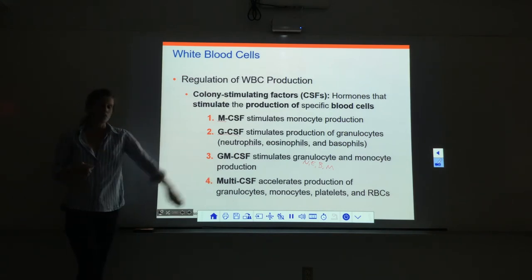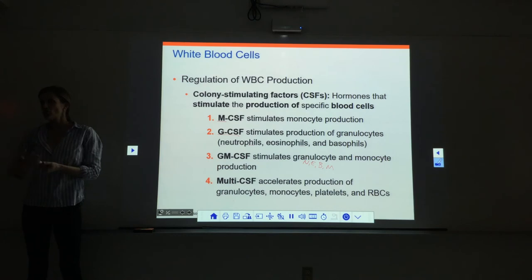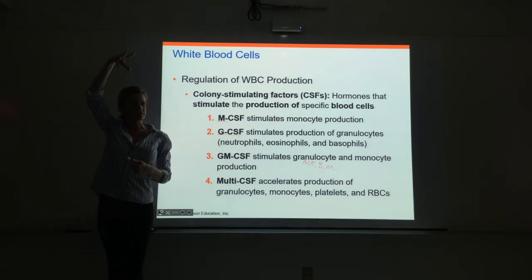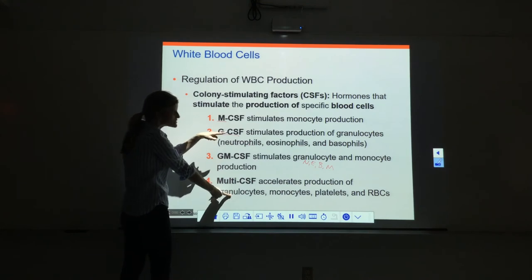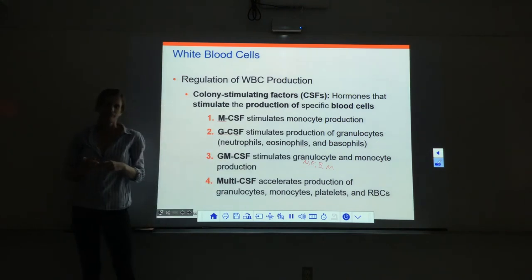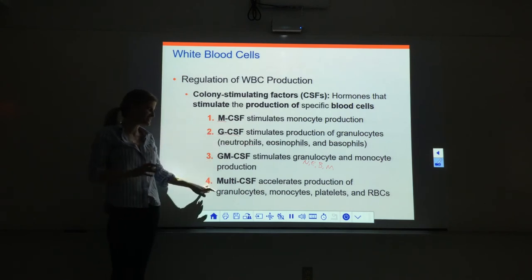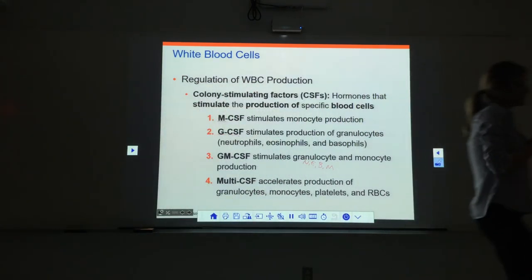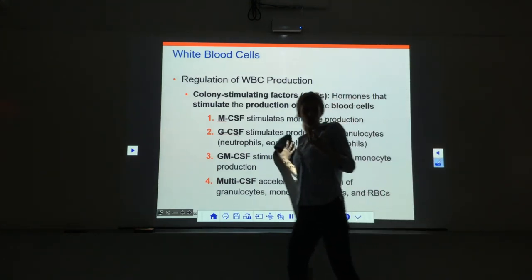Multi-CSF is the one we mentioned when talking about red blood cells. Multi-CSF stimulates every type of blood cell except lymphocytes. It essentially stimulates the myeloid stem cell, so everything below that gets stimulated — all granulocytes (eosinophils, neutrophils, basophils), monocytes, platelets, and red blood cells. So multi-CSF stimulates all blood cells except lymphocytes.